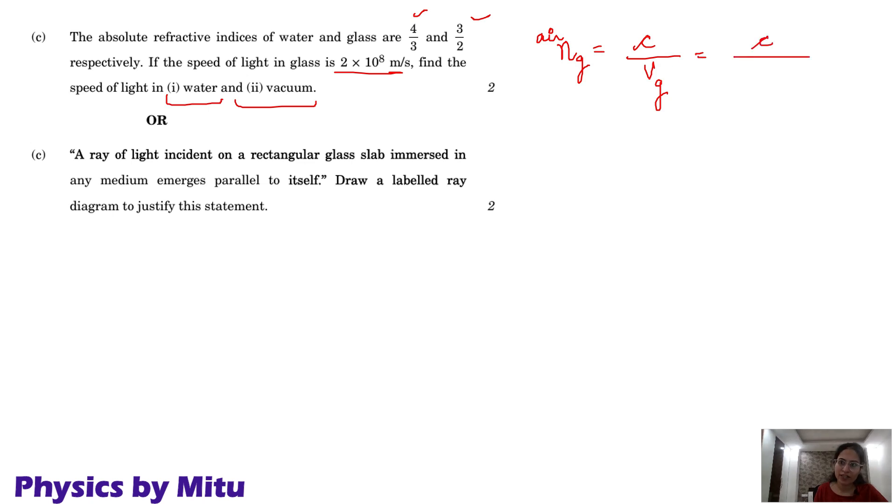C, speed of light in vacuum, you have to find. Vg is given 2 into 10 to the 8. And this value is 3 by 2. So C is 3 into 10 to the 8 meter per second. Speed of light in vacuum.